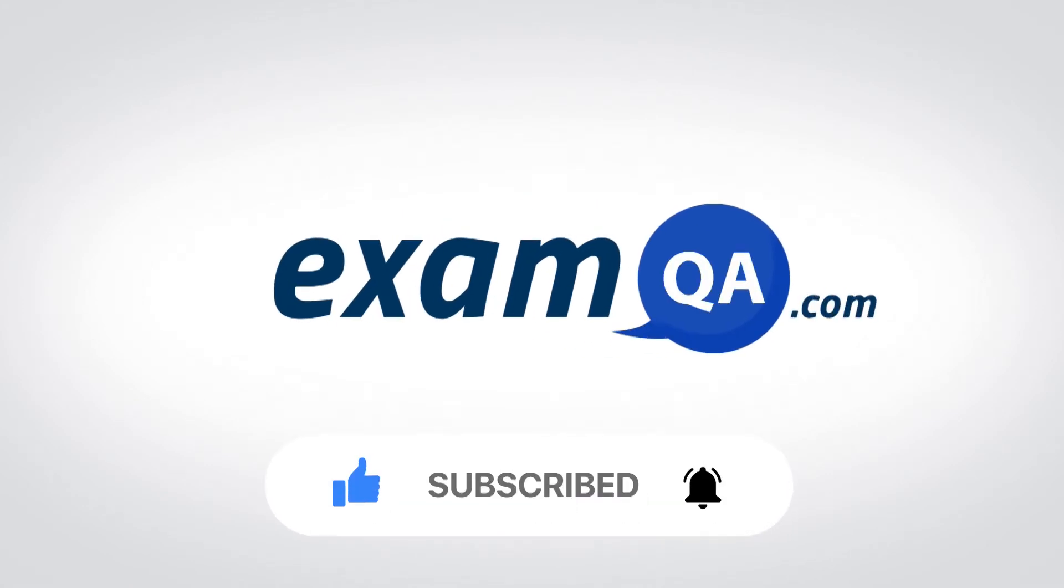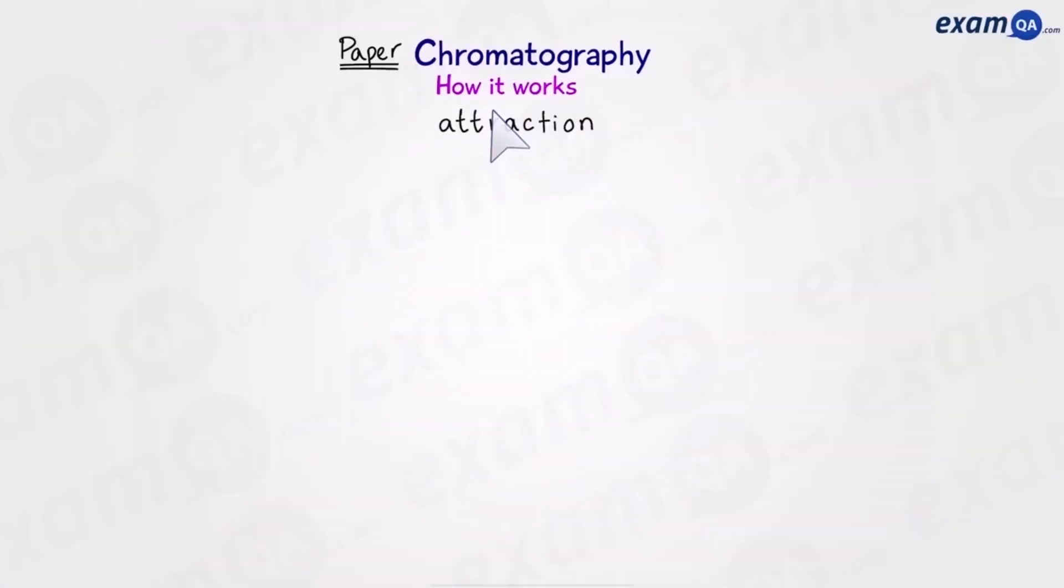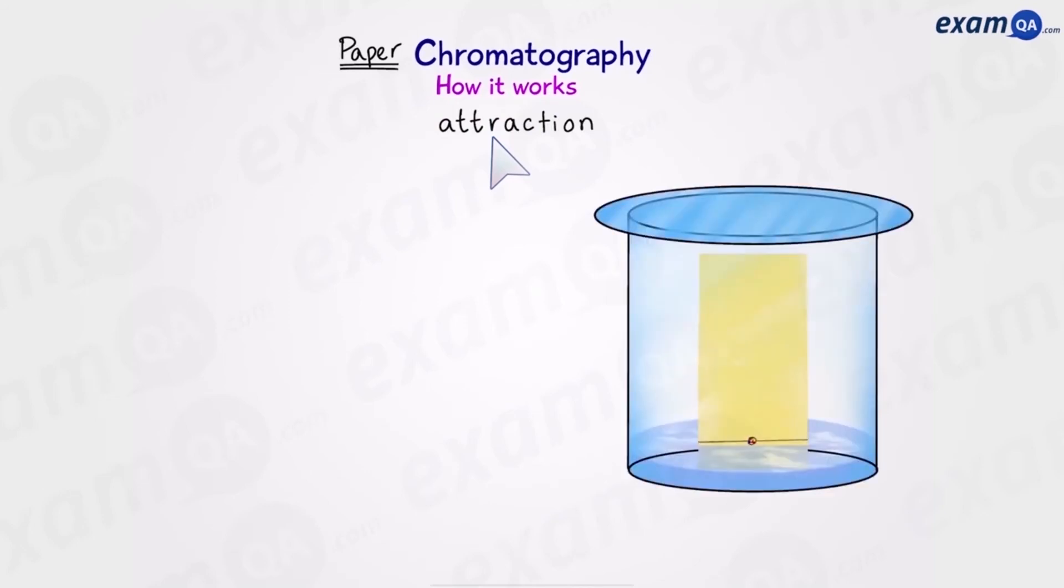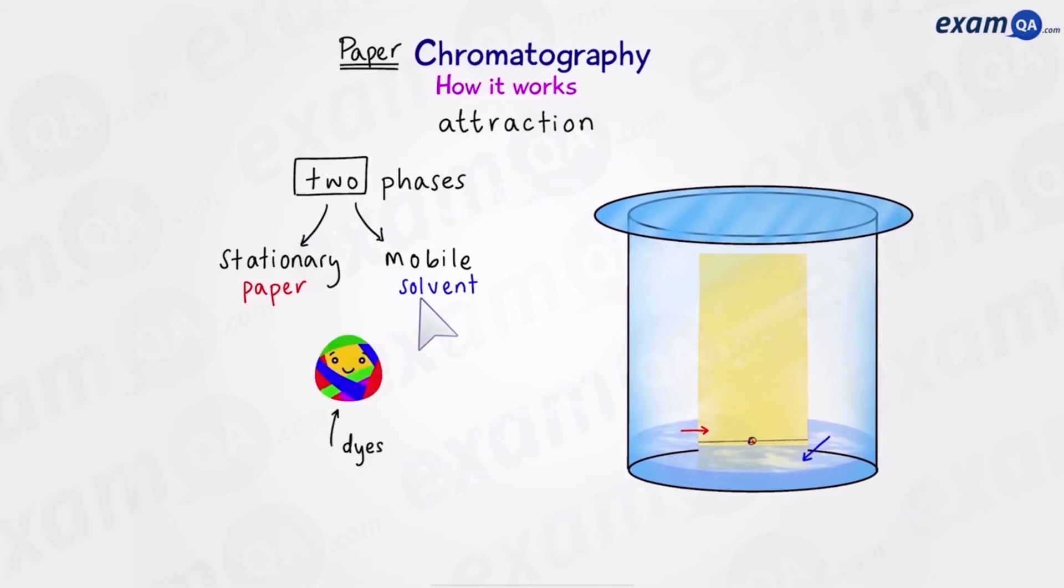Okay so how does paper chromatography work? It's all to do with attraction. During the separation stage we have two phases. A stationary phase and a mobile phase. The stationary phase is the part that's not moving, in this case the paper. And the mobile phase is the part that is moving, in this case the solvent.